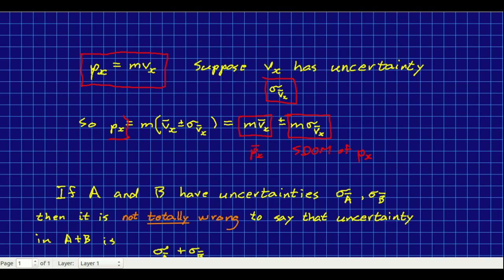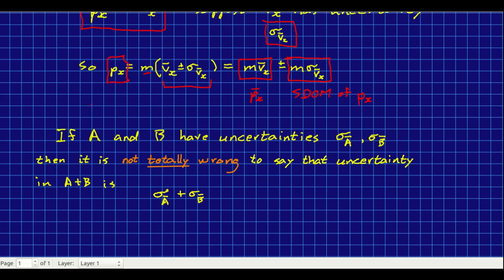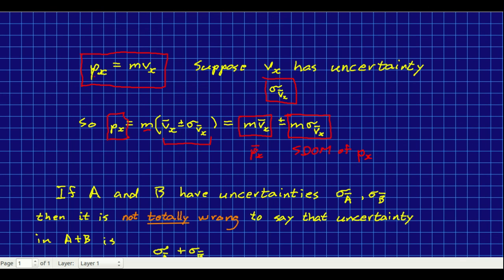Then the momentum that you would quote can be thought of as that inertia times the mean plus or minus SDOM. Our best estimate plus or minus our uncertainty in the velocity. So just multiply that through and you get MVX bar, so there is our mean or best estimate of the momentum, plus or minus m times the uncertainty in VX. So there is our uncertainty in PX.